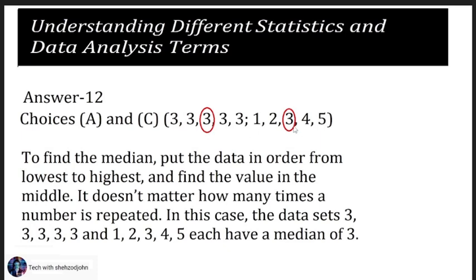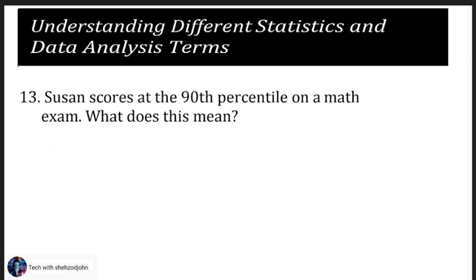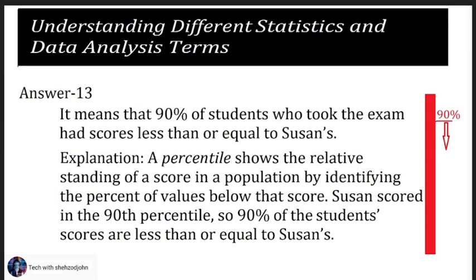Question 13: Saucon scores at the 90th percentile on a math exam. What does this mean? The answer to question 13 is: it means that 90 percent of the students who took the exam have scores less than or equal to Saucon's score.